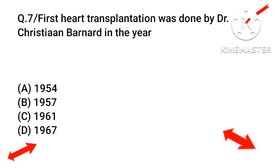Question number seven: first heart transplantation was done by Dr. Christian Barnard in which year? The right answer will be 1967, option number D.